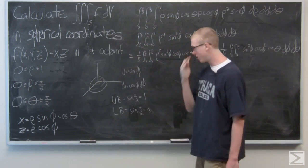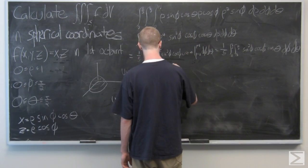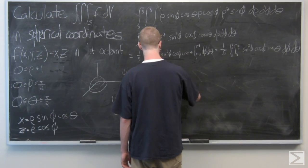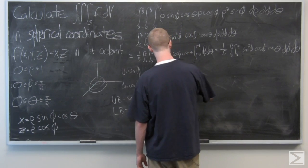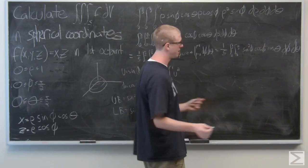All right, so now that we have our bounds changed up, we can plug back in here and make our U substitution. Sine squared phi is going to become U squared. Cosine phi d phi is going to become du.